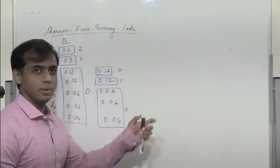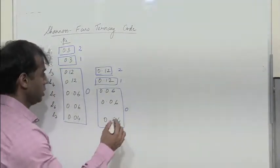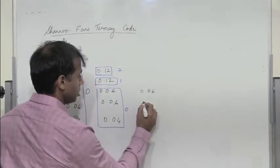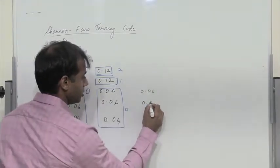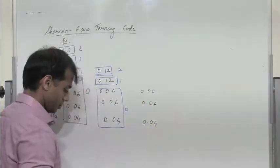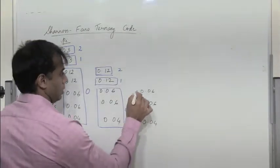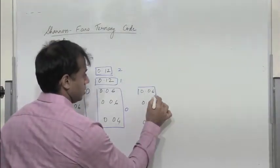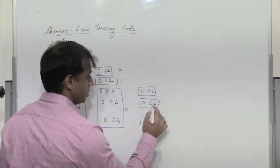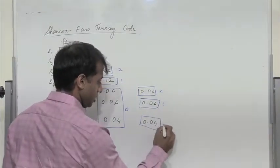S3 (0.12) and S4 (0.12) cannot be further divided or grouped. The remaining subgroup contains S5 = 0.06, S6 = 0.06, and S7 = 0.04 — three individual symbols, assigned codes 2, 1, and 0 respectively.